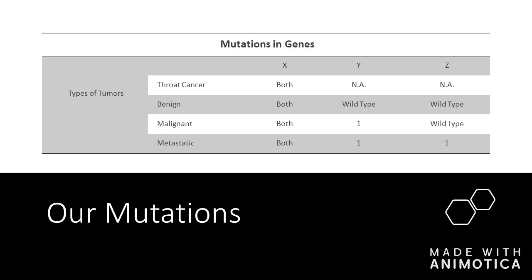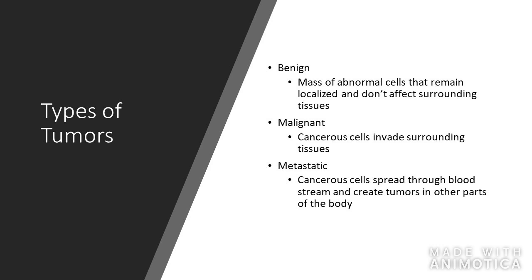On this next slide, we'll talk about the different types of tumors. Benign is a mass of abnormal cells that remain localized and don't affect the surrounding tissues — these aren't necessarily harmful unless maybe the size is pushing on your windpipe. Malignant means cancerous cells invade the surrounding tissues, like bladder cancer or lung cancer. Metastatic means the cancerous cells spread through the bloodstream and create tumors in other parts of the body — so maybe it started in your throat and then you ended up having bladder cancer.